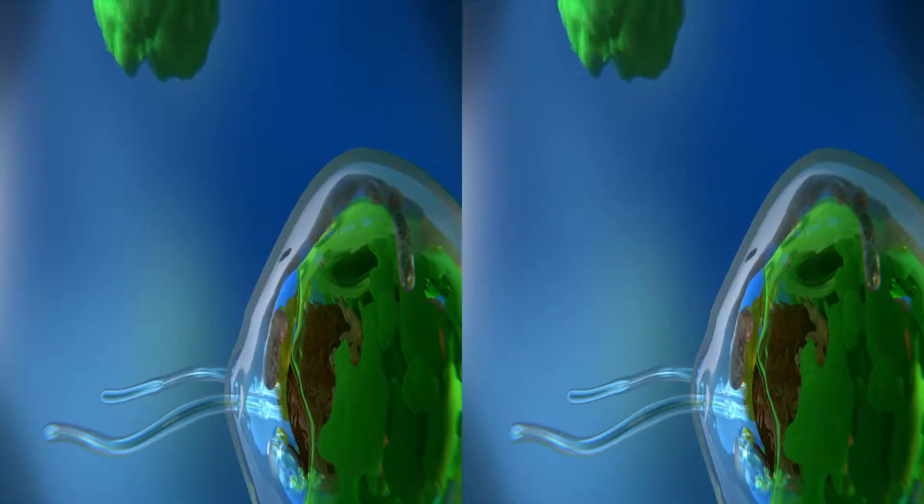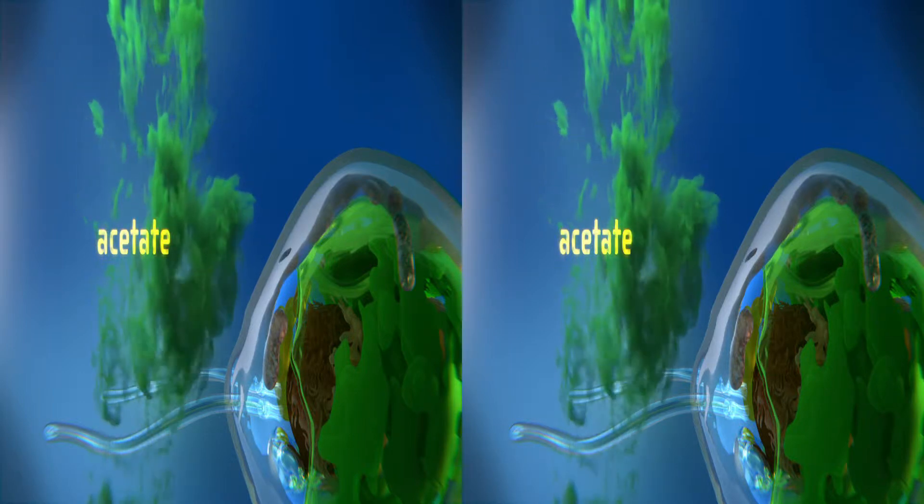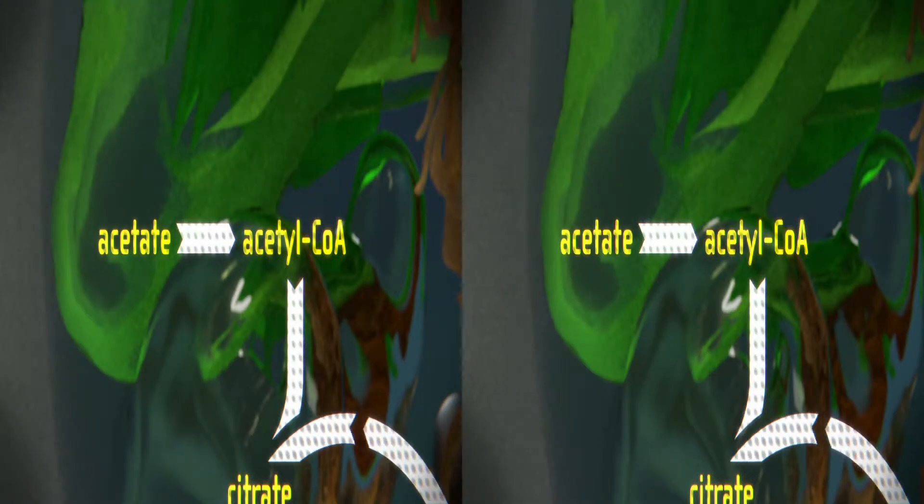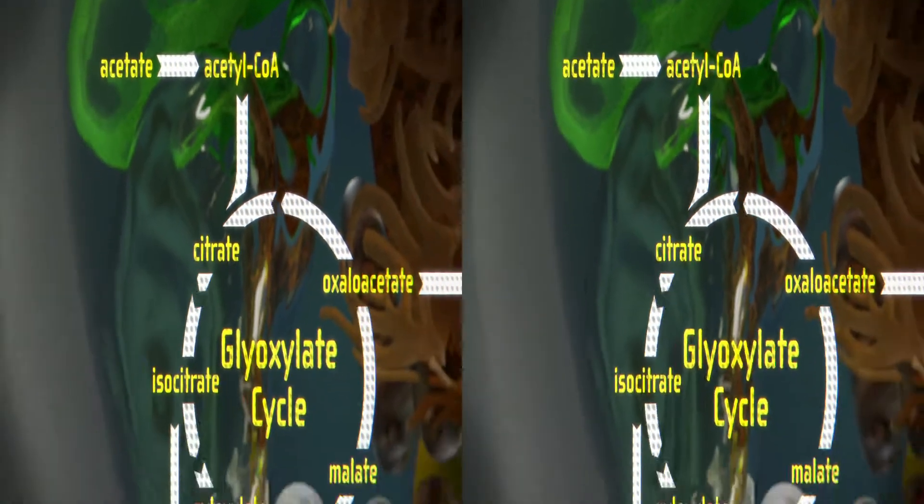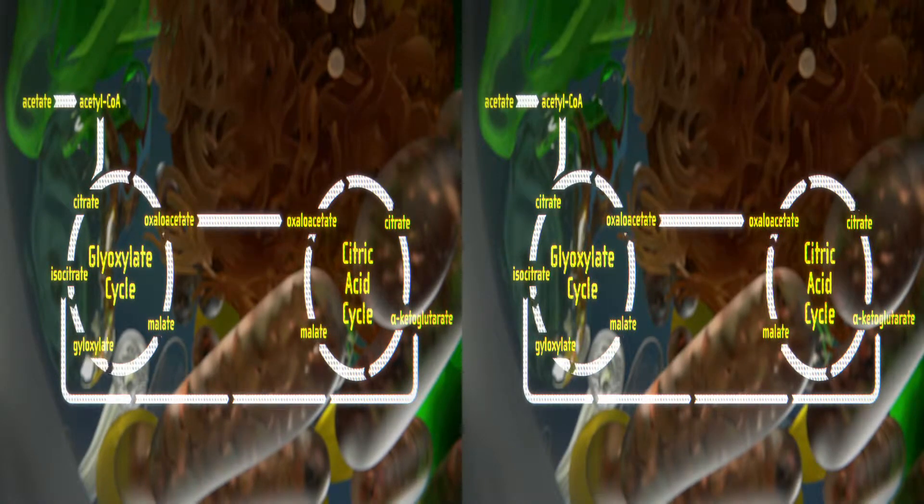Under laboratory conditions, the cell can also be enriched with acetate as an alternative carbon source to promote heterotrophic growth. First, the substance is converted to acetyl coenzyme A. Then it goes through the glyoxylate cycle and the citric acid cycle.